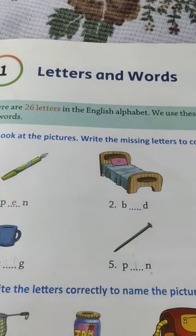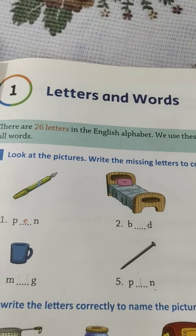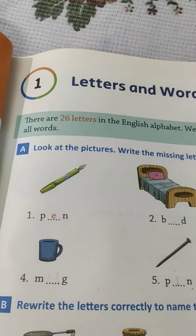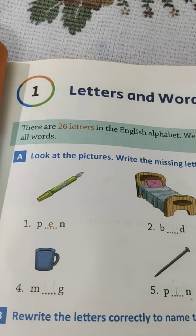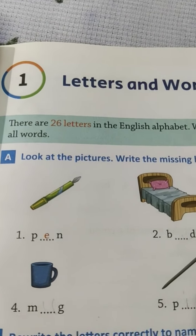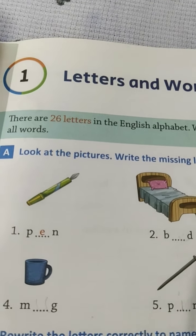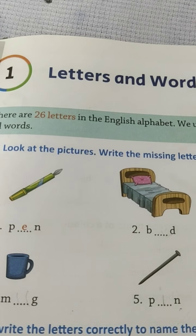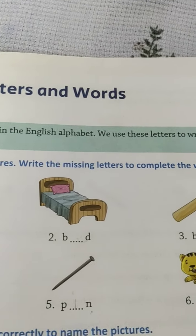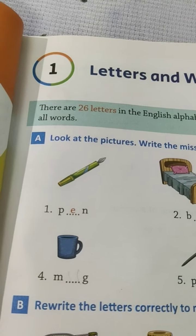Today we will discuss Chapter 1: Letters and Words. Children, how many letters — how many English alphabets are there? Yes, there are 26 letters in the English alphabet. We use these letters to write all words.